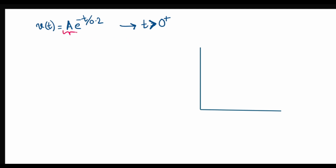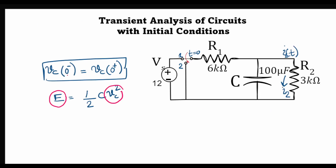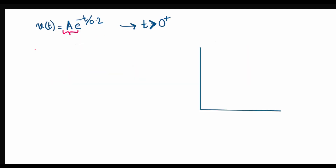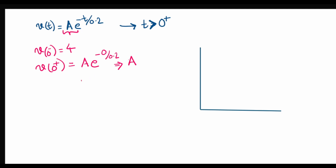To find the constant A, we use initial conditions. For a capacitor, VC(0⁻) = VC(0⁺), and we found VC(0⁻) = 4 volts. Setting V(0⁺) = A·e^(−0/0.2) = A equal to 4, we get A = 4. So the total voltage response is V(t) = 4·e^(−t/0.2).